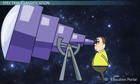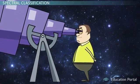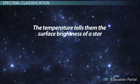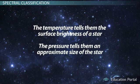Scientists have been studying stars for a long time, and over time they have learned to tell a lot about a star just by determining its temperature and atmospheric pressure. The temperature tells them the surface brightness of a star, and the pressure tells them an approximate size of the star.